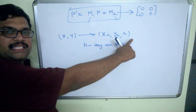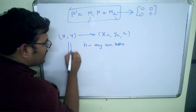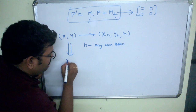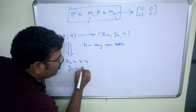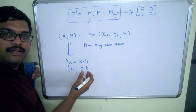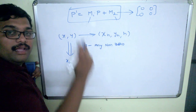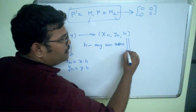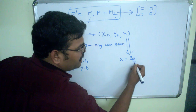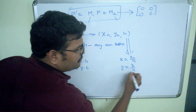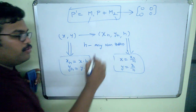Depending on h, the x and y coordinates will also change. The new coordinates xh equals x times h, and yh equals y times h. We need to multiply h with both x and y coordinates to get xh, yh, and h. If we want to convert back to two-dimensional, simply divide by h: x equals xh divided by h, y equals yh divided by h. These are the formulas for converting two-dimensional coordinates into homogeneous coordinates.